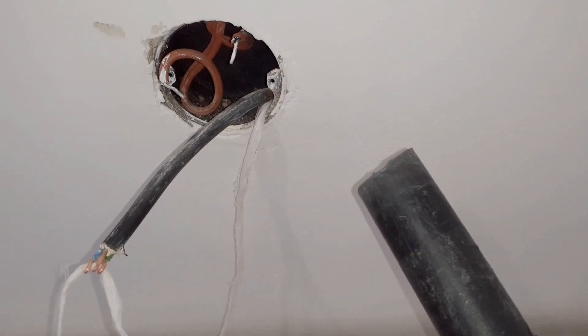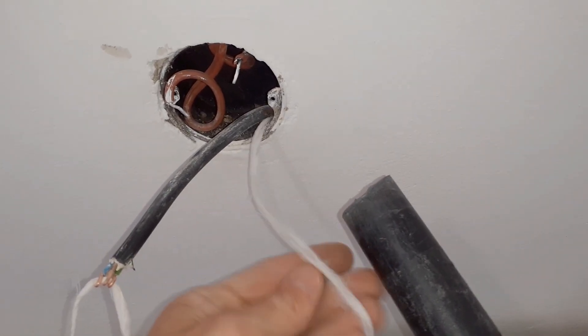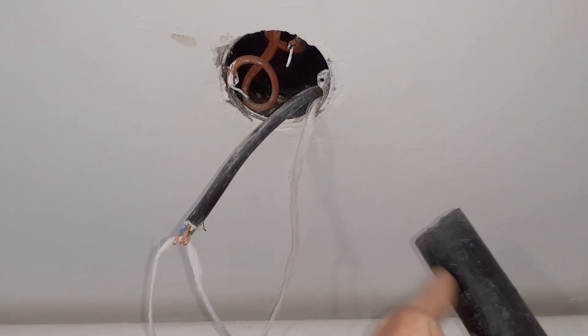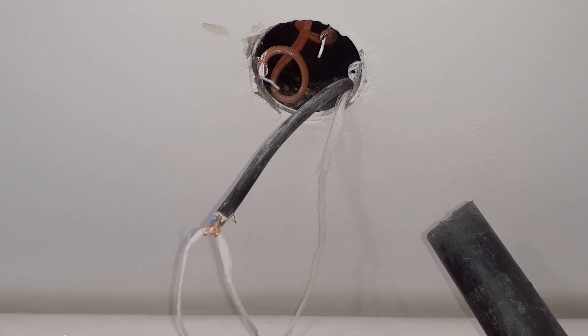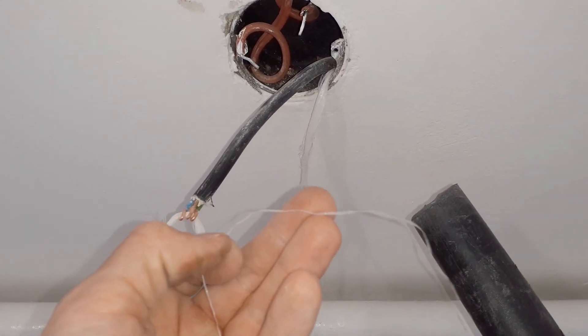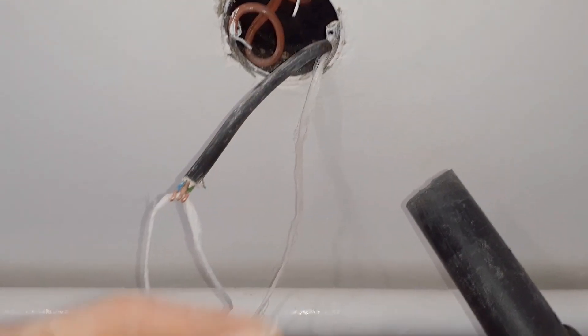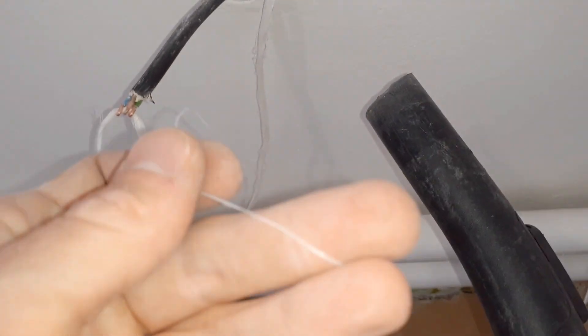You basically use a vacuum cleaner to suck the string in. And of course the vacuum cleaner might not be strong enough to suck a thick and strong string in. So use a thin one first, suck it in, then pull a thicker one using the thin one in.